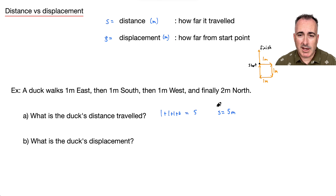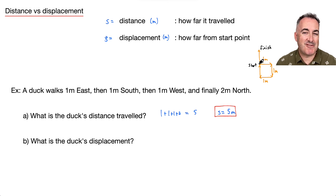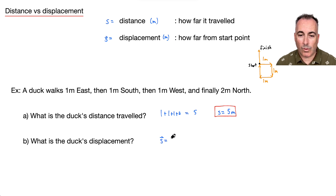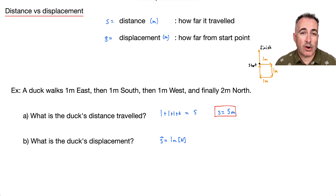Now for the displacement: I have to consider where you started and where you finished. The duck started here and finished one meter to the north. So the displacement equals one meter north — and I'll define the direction in square brackets. That makes it really clear.